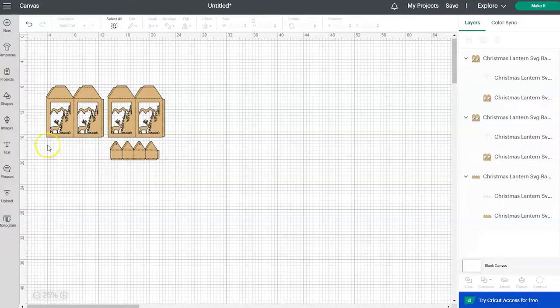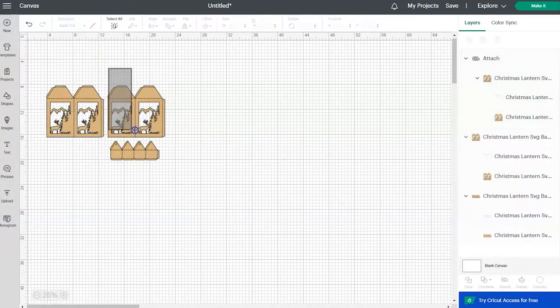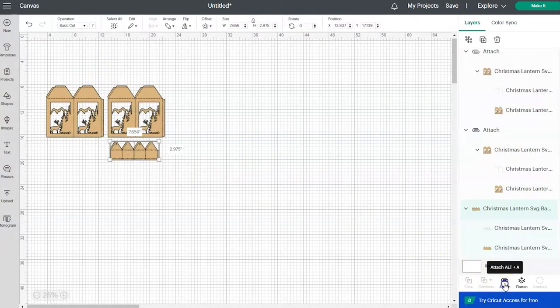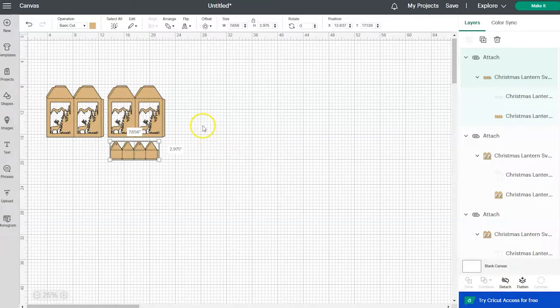And then the next thing that we need to do is attach the perforation lines to the lantern shape. So you'll just select the perforation lines in the lantern shape and then you can click attach. And do that on all three sections. And that really is all that we need to do on this canvas screen. So now you can go up and click on the green make it button.